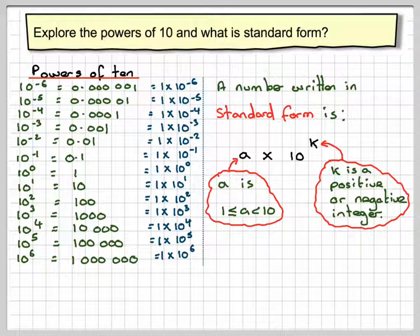Why do we have standard form? We use standard form when we need to write numbers that are either very large or very small. Otherwise, we'd have lots and lots of digits that are hard to read.